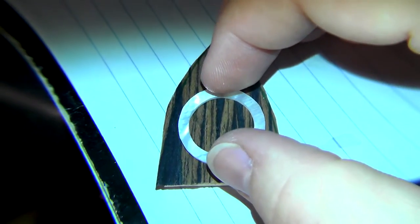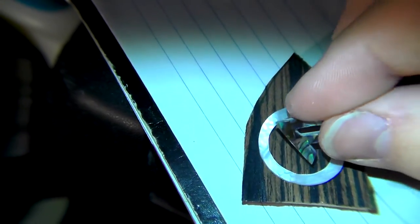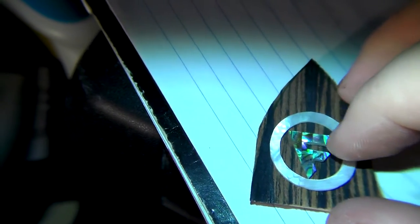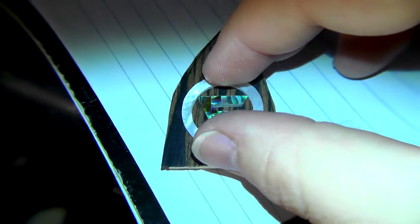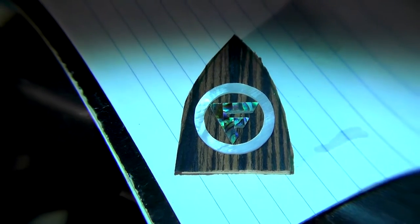I also glued together some abalone to make my little F out of and insert that in there. I'm skipping the actual inlay process because I'm doing that on the neck video. So here's a little preview of that. You just chisel out your design, then you hit it with the Dremel and finish with the chisel. But we'll get into that later.